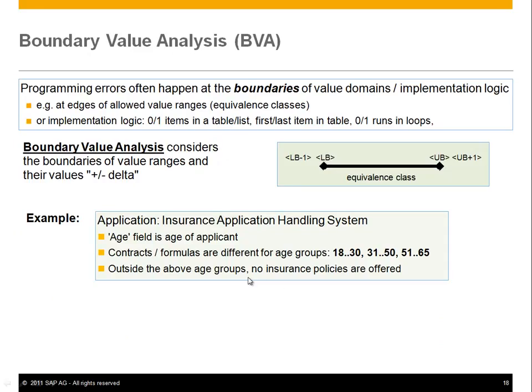This is a famous example, but it illustrates a general principle: programming errors often happen at the boundaries of value domains or implementation logic — for instance, at the edges of allowed value ranges.